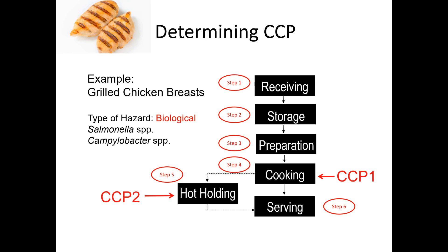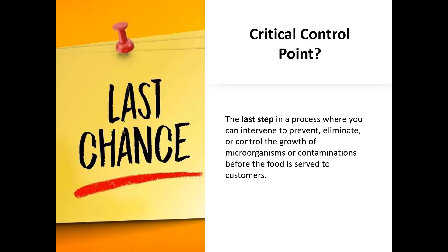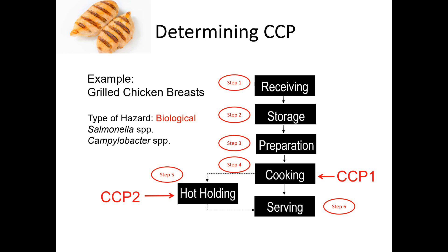Now what does this actually mean? What does a CCP mean? Well, it means that it's the last step in a food process where you can intervene to prevent, eliminate, or control the growth of microorganisms or contamination before the food is served to customers. So if we look at this process, cooking is the last time where you can kill the salmonella or kill the campylobacter. And CCP2 is the step where you're keeping the chicken at a certain temperature that will prevent the growth of salmonella or campylobacter. Because the next step is serving — there's no more cooking of the food, there's no more hot holding. So that is your last chance to control those hazards, and that is why it's a critical control point.